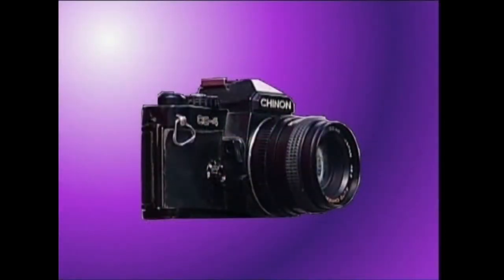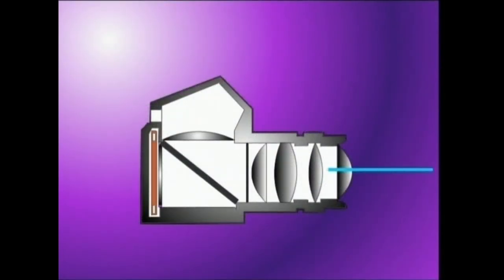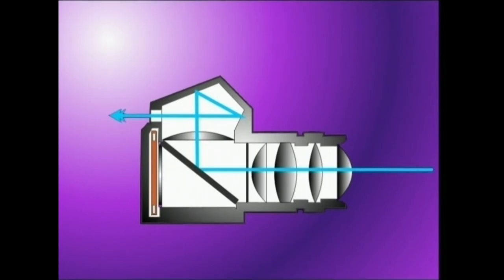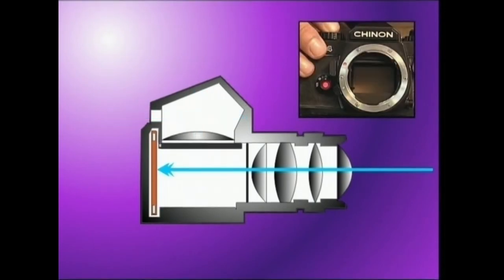Onela dabil Reflex kamera. Objektiboa zeharkatzen duen argia, izpilu batek izlatzen du pentaprisma bat medio okularrean. Ordagoen lupa txiki batek, pantaila haundi eta argitsua ikustea ahalbidetzen digu. Kliska egiten dugunean, argi izpiak pelikulara irits daitezen, izpiluak gorantz egiten du eta obturadorea irekitzen da.